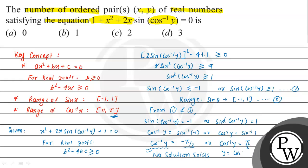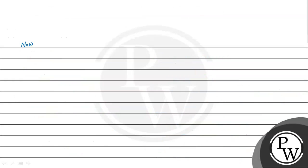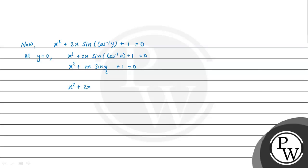For the second case, cos⁻¹y = π/2, so y = cos(π/2) = 0. Now substituting y = 0 into the original equation: x² + 2x·sin(cos⁻¹(0)) + 1 = 0, which becomes x² + 2x·sin(π/2) + 1 = 0, giving x² + 2x·1 + 1 = 0, so (x + 1)² = 0, therefore x = −1.